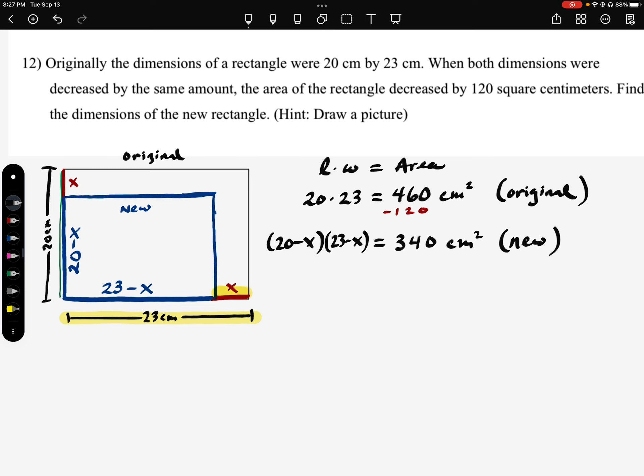So that is our equation. So we're going to take it and we need to solve it. We need to simplify this part of it by multiplying those together. So 20 times 23 is going to be 460, 20 times negative x would be negative 20x minus 23x, and then we have plus x squared. And that ended up equaling 340.